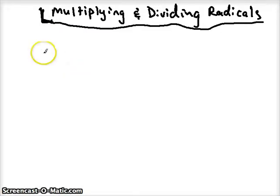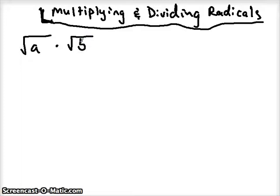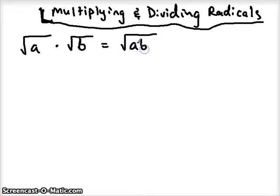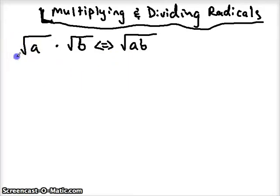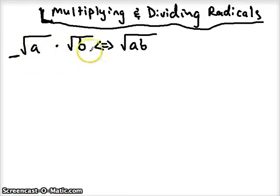Multiplying radicals — you just have to remember your product property. As long as we have two numbers under the same kind of radical, the same index, then we're allowed to rewrite them and multiply them under that one radical. Or we could go back and forth between these two forms, whichever allows us to simplify better. Remember, we can't multiply things outside a radical by things inside a radical. We multiply things outside together, and as long as the index is the same, we multiply things under the radical together.